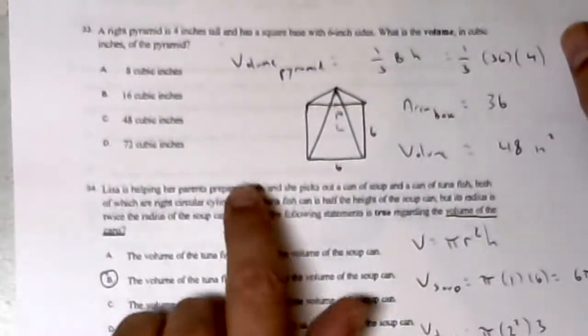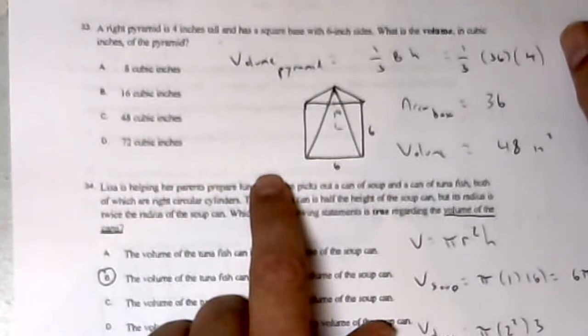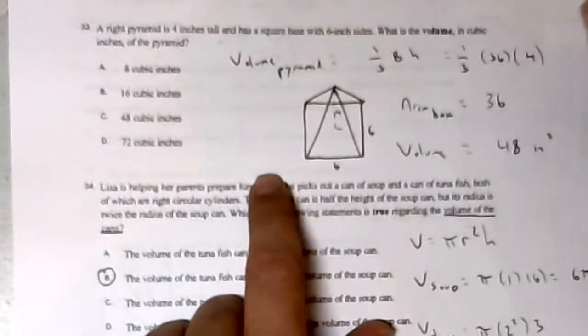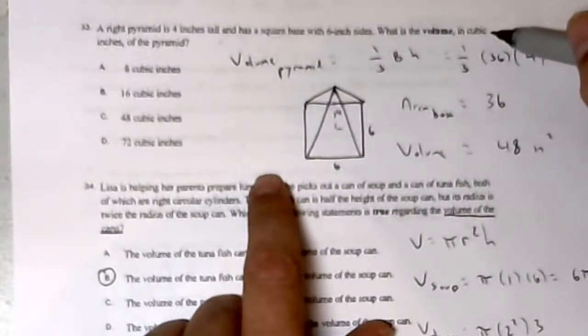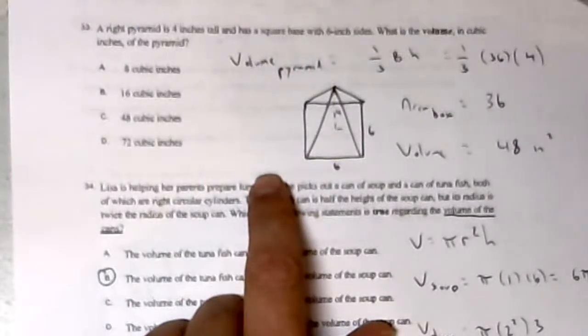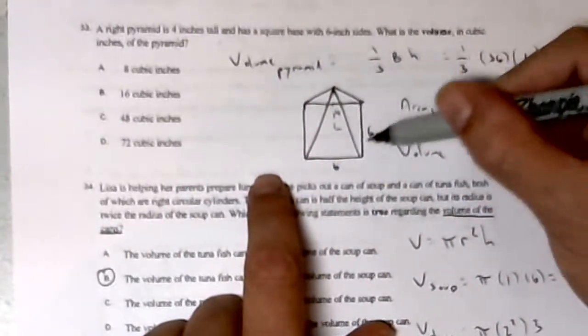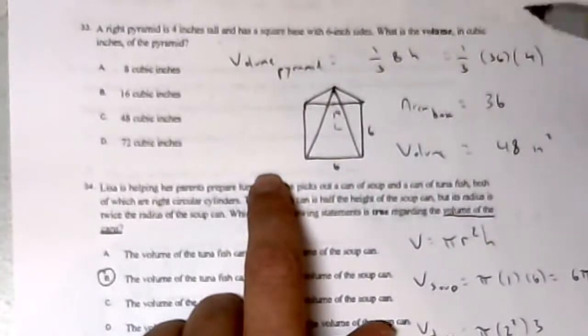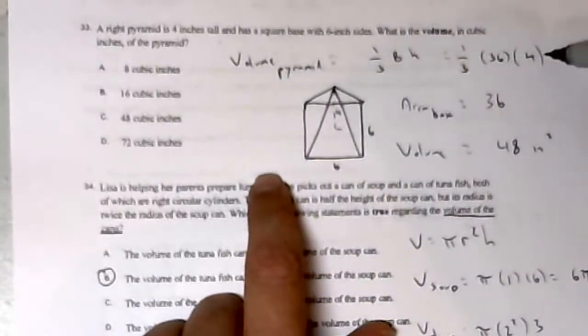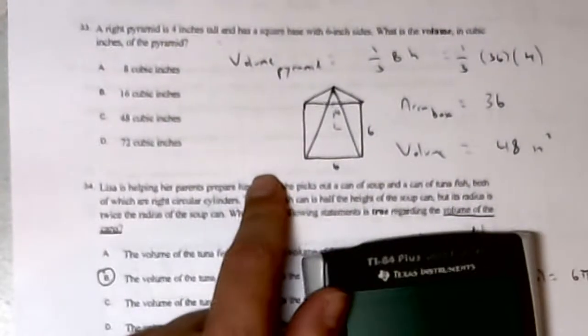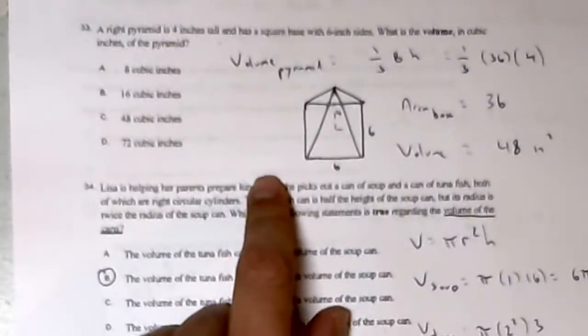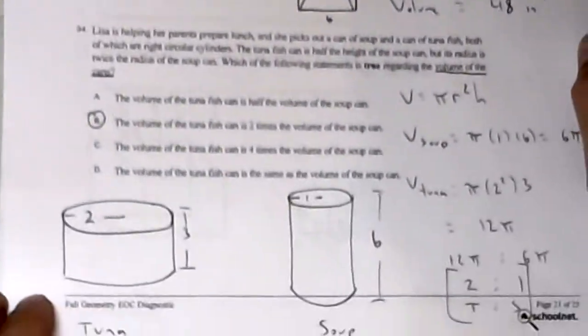A right pyramid is 4 inches tall and has a square base with 6 inch sides. What is the volume of the pyramid? I like when they ask just to find the volume of a shape and you just use the formula: one-third base times height, where the area of the base is square, so it's side squared. One-third, 6 times 6, and the height is 4. So we have a volume of 48.